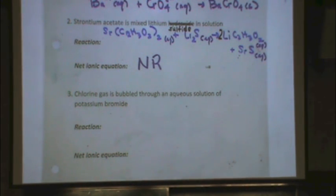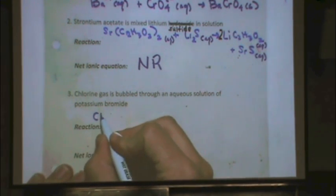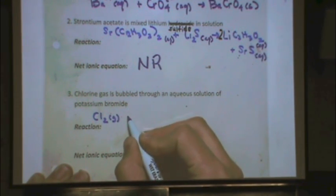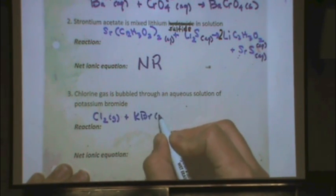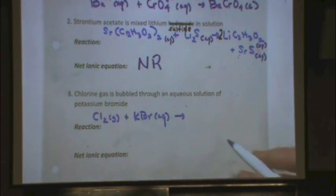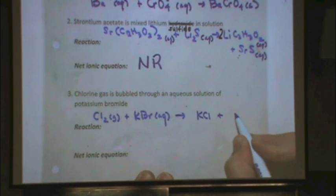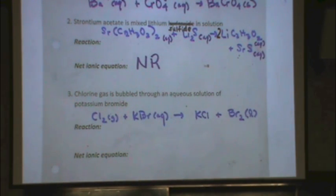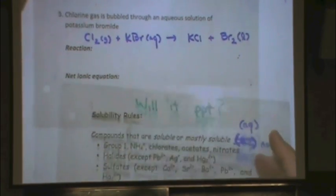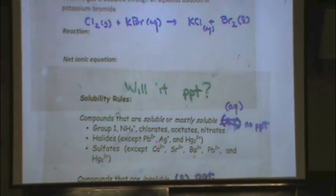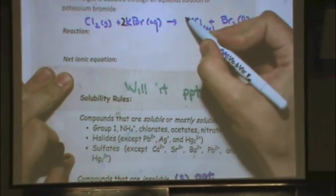Next example: fluorine gas, F₂. When you see that, write F₂ gas, not just F. Fluorine gas is bubbled through an aqueous solution of cesium bromide, which is aqueous per the solubility rules. This is a single replacement reaction, so we get KCl and Br₂. Bromine is a liquid. KCl, looking at the solubility rules, is definitely aqueous per bullet 1 — there's a group 1 and a halide in there. Balance by putting a 2 in front of both potassium compounds.